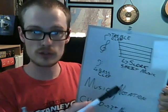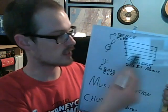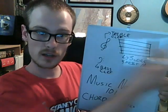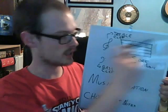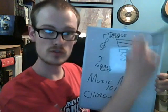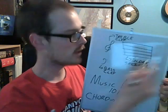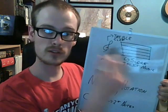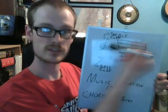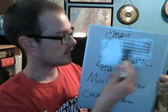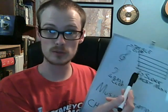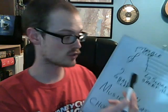So in guitar sheet music, you would see one of these, except a bunch of them laid end to end with a bunch of notes written on them, with the treble clef on the far left side. And that is how guitar music is written in sheet form.